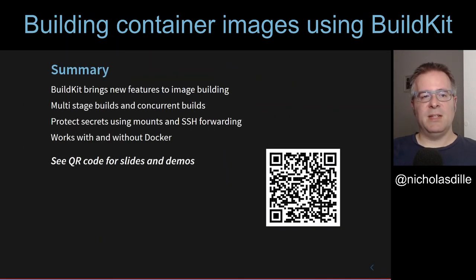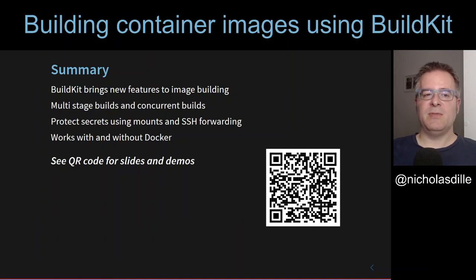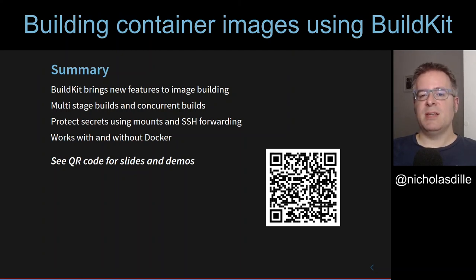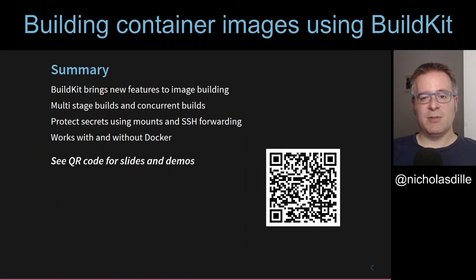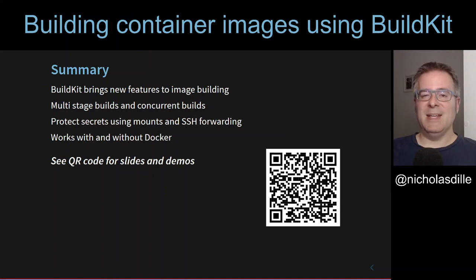So what we've seen in this lightning talk is that BuildKit brings a list of new features to image building. One of the highlights is concurrent builds for multi-stage builds, where stages can be run in parallel to speed up your build. We've seen that it's possible to mount secrets temporarily into a build — this is also possible for the SSH agent socket, which you can forward into the build. And we've seen that it's possible to do this with and without Docker. Thank you for listening, I'm really looking forward to your questions. See you later, bye everyone.